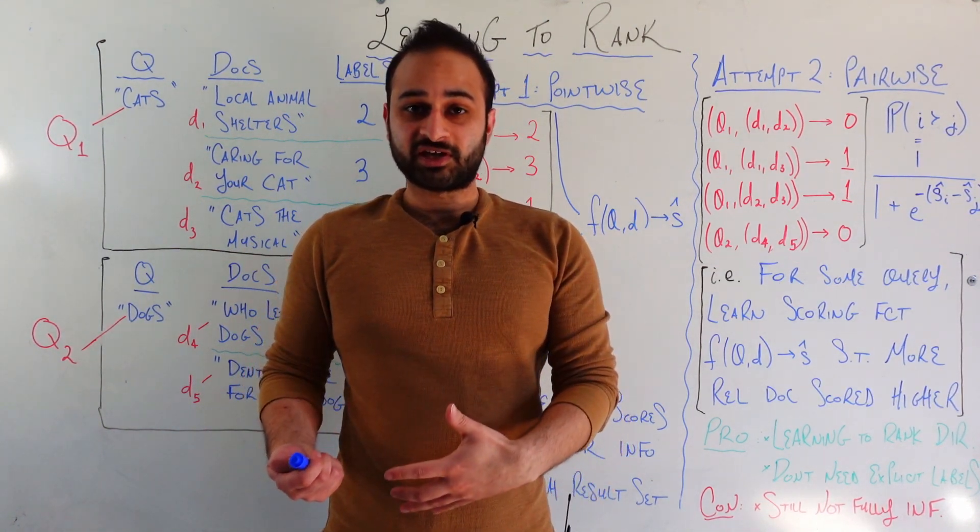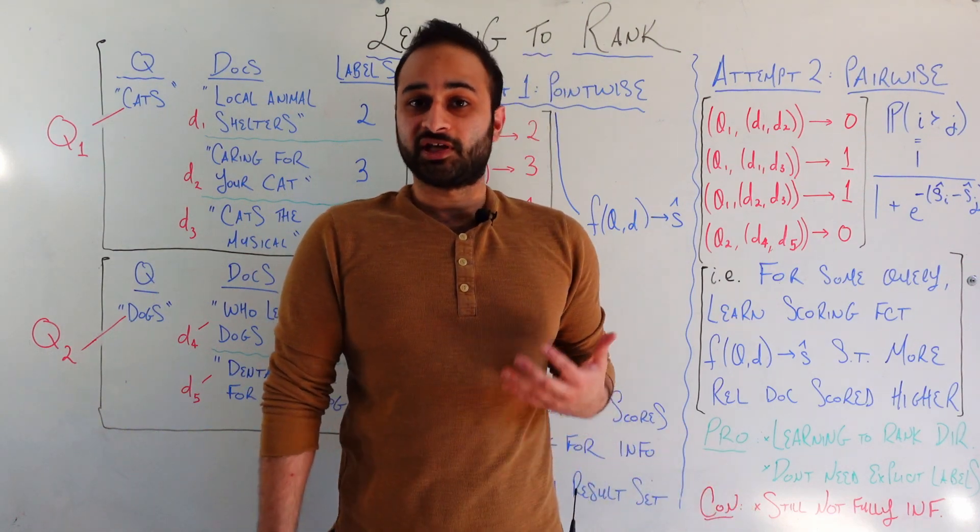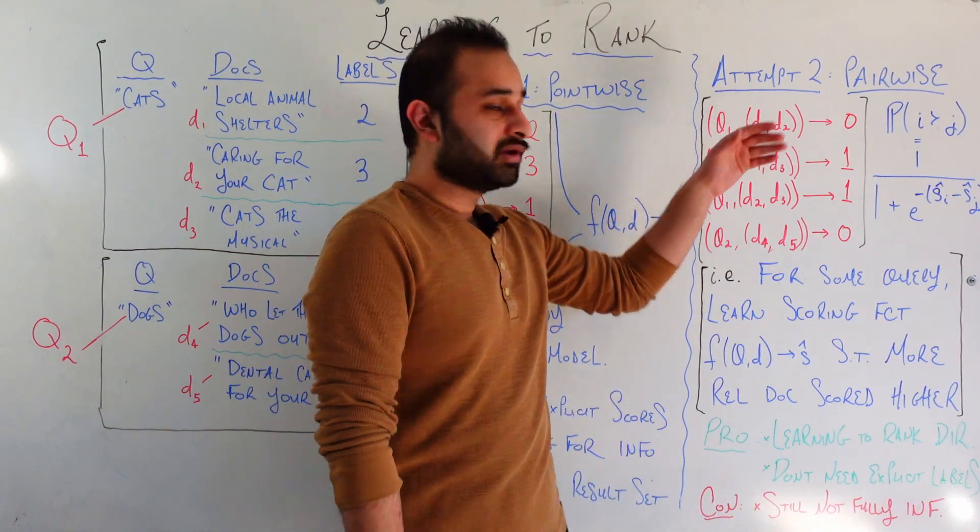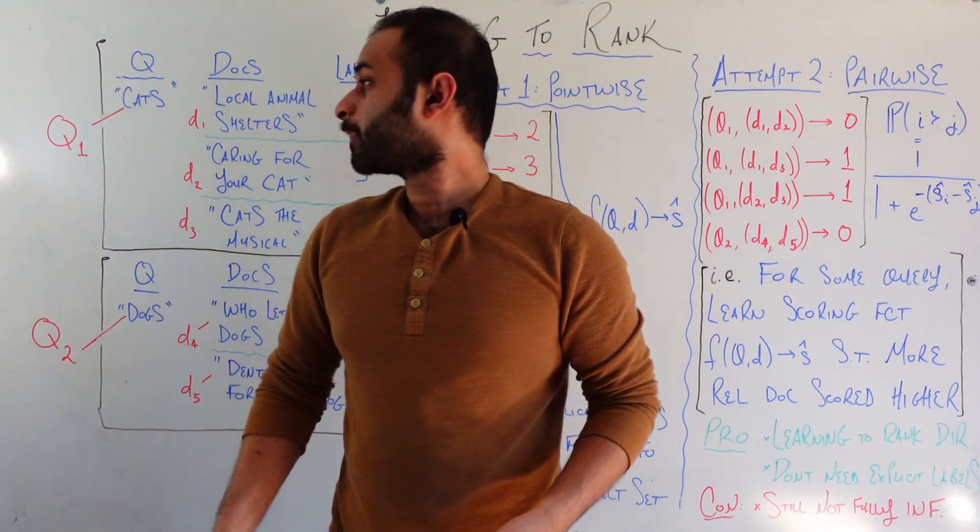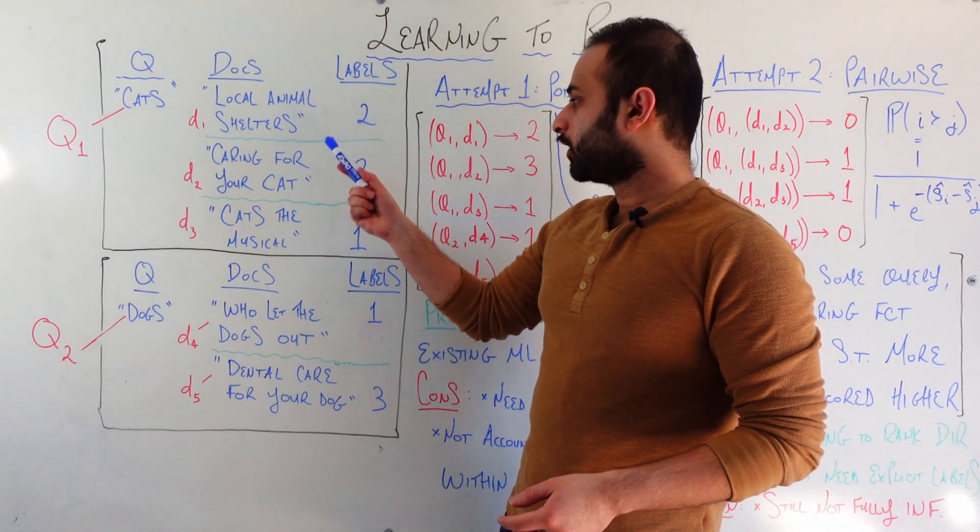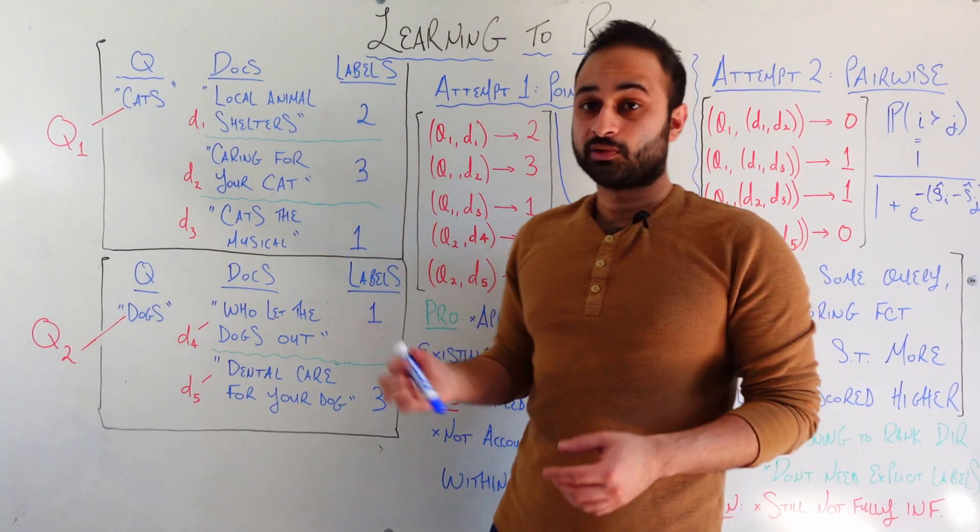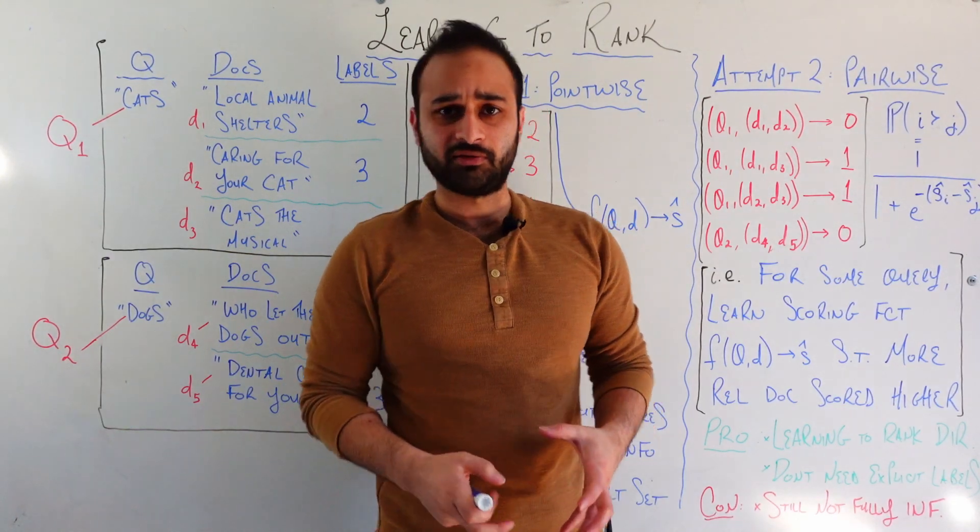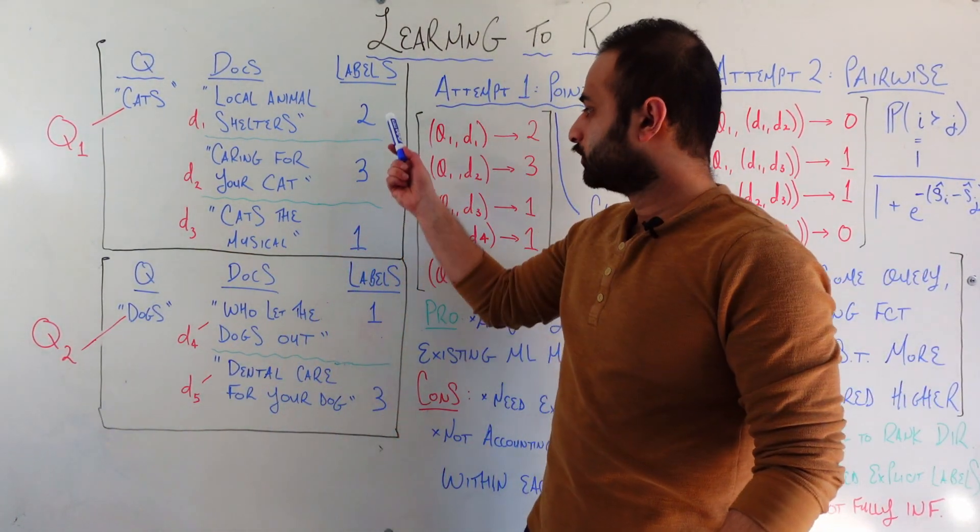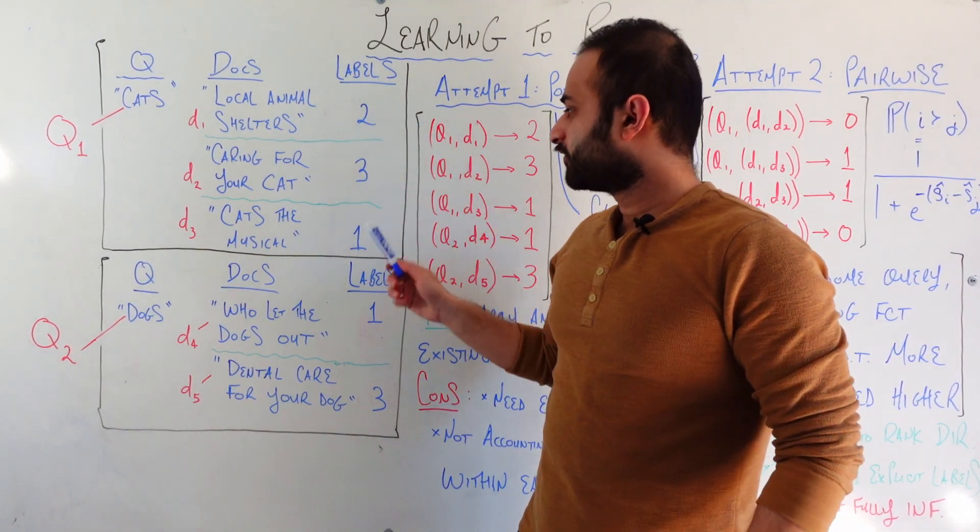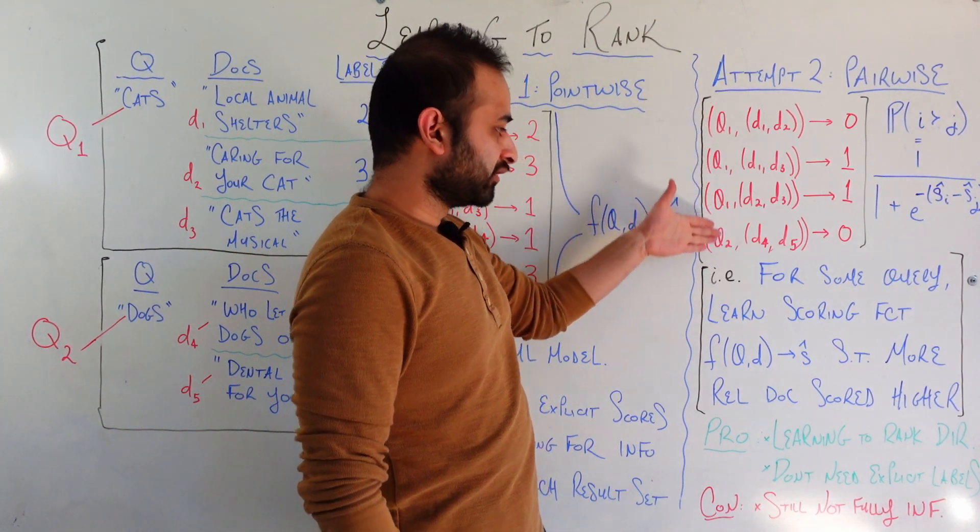And what are the labels in this case? The labels are binary. And it's simply just a label that says whether D1 is ranked higher than D2, has a higher relevance. So we see that D1 is not ranked higher than D2. It has a label of 2 and this one has a label of 3. So it's less relevant than 3. Therefore, we put a 0 here. D1, D3, if we look at D1 and D3, this guy does have a higher relevance than this guy. So we give it a label of 1.